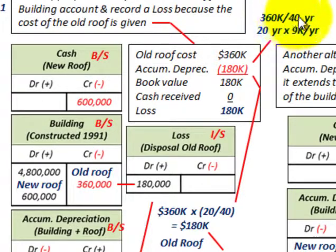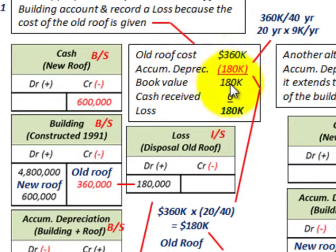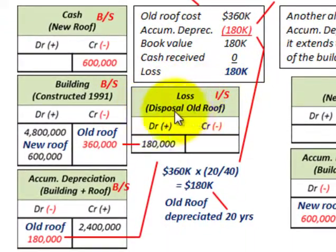We calculated the accumulated depreciation by taking the $360,000 cost based on the life of the building — 40 years — giving us $9,000 per year, times 20 years depreciated from 1991 to 2011. That equals $180,000 in accumulated depreciation. Subtracting that from the old roof cost gives us a book value of $180,000. With no cash received, that gives us a loss of $180,000.